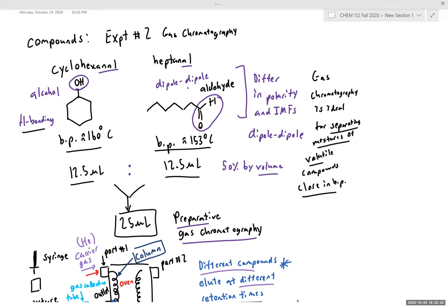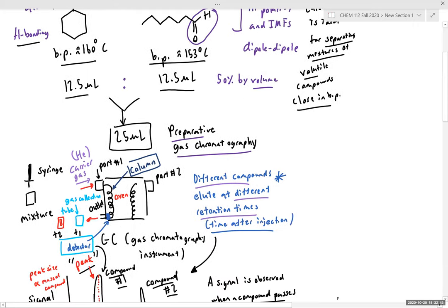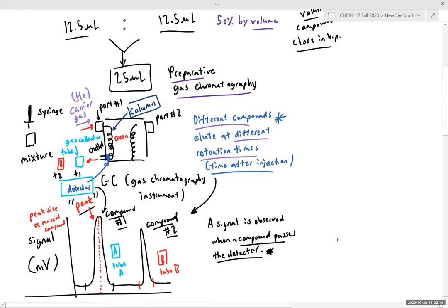Different — exactly. Cyclohexanol engages in hydrogen bonding, while heptanol engages in primarily dipole-dipole interactions. In the first part of this experiment, we're going to take a 50% mixture by volume of each of these components and separate it via preparative gas chromatography. Note, this is a 50-50 mixture by volume.